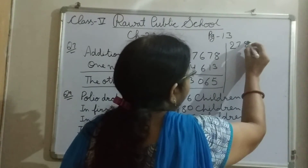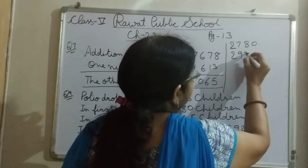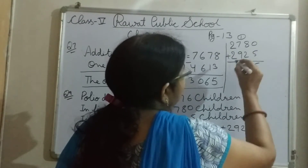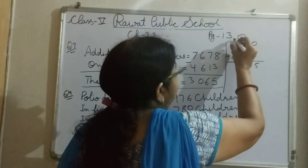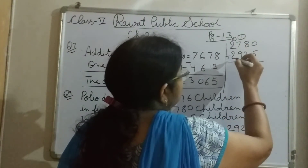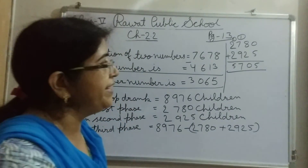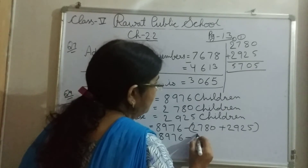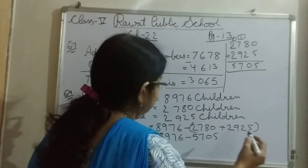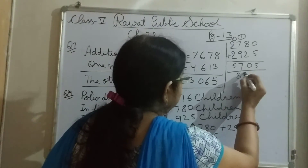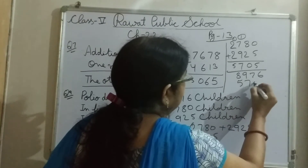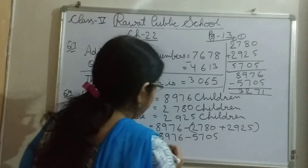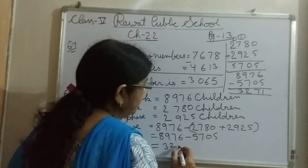तो 2,780 में plus करेंगे 2,925. 0 plus 5 = 5, 8 plus 2 = 10, 1 carry over, 9 plus 7 = 16 plus 1 = 17, 1 carry over, 2 plus 2 = 4 plus 1 = 5. It means 5,705 children. Then 8,976 minus 5,705. It means 3,271 children in the third phase.